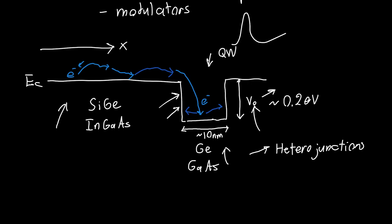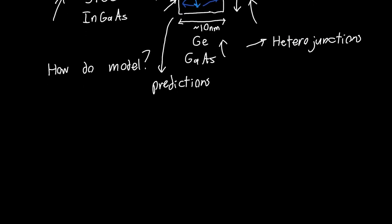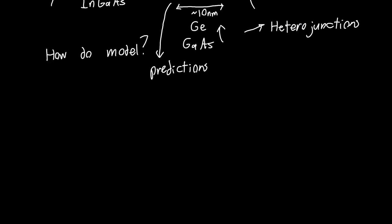So this is great, but how do we model this? How do we form an understanding and make predictions about what this is going to cause? We want to make predictions about what sort of behavior this quantum well is going to exhibit, so we need to figure out a physical model for this.